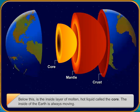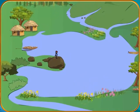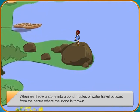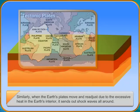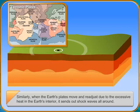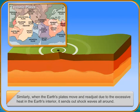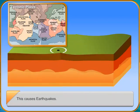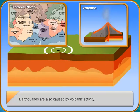Earthquakes are also caused by volcanic activity. When an earthquake occurs, the point of disturbance is called the focus of the earthquake. The point directly above the focus on the Earth's surface is called the epicenter of the earthquake. The vibrations are called seismic waves. An earthquake is always the strongest at the epicenter. As the shock waves move away from the epicenter, they get weaker, which is why an earthquake is less severe in places far from the epicenter.